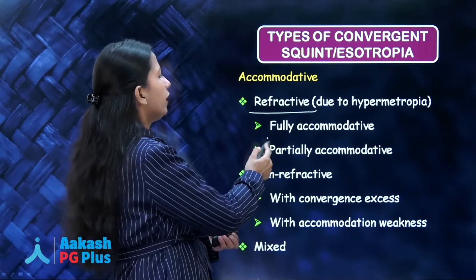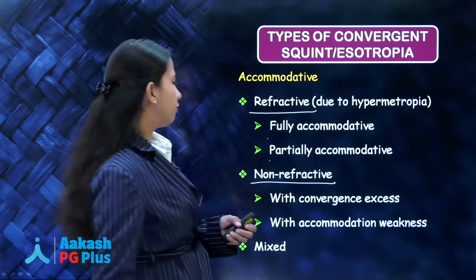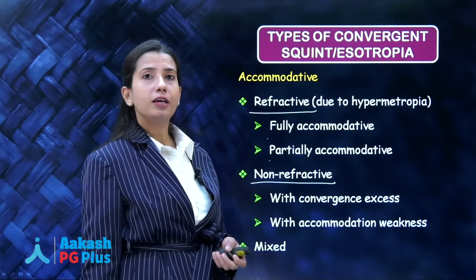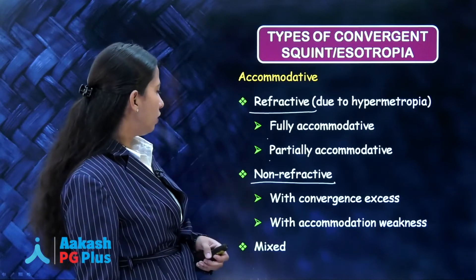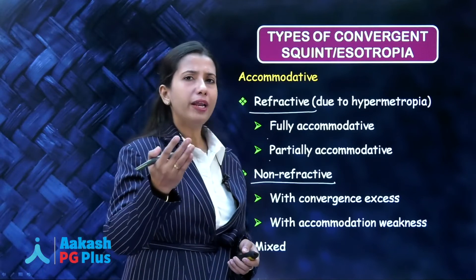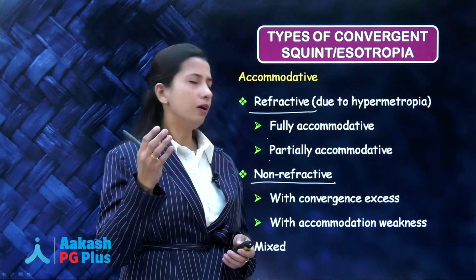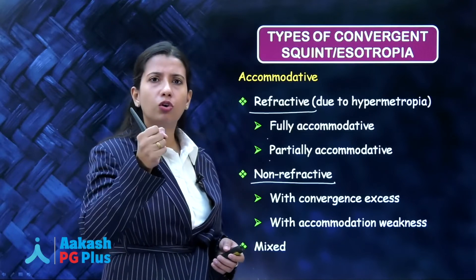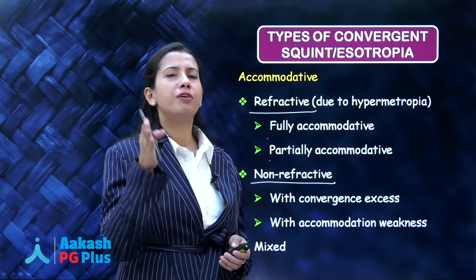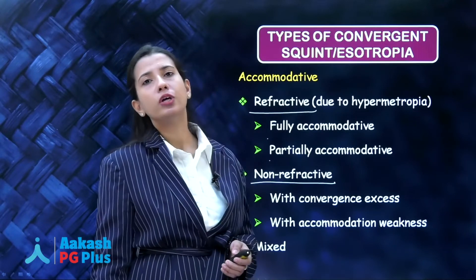Esotropia can be fully accommodative or partially accommodative. Non-refractive causes can also cause esotropia, such as convergence excess or accommodation weakness — meaning that though only one diopter of accommodation is needed, the convergence is so strong that even with one diopter of accommodation, it is converging the eye so much that the eye goes into esotropia.